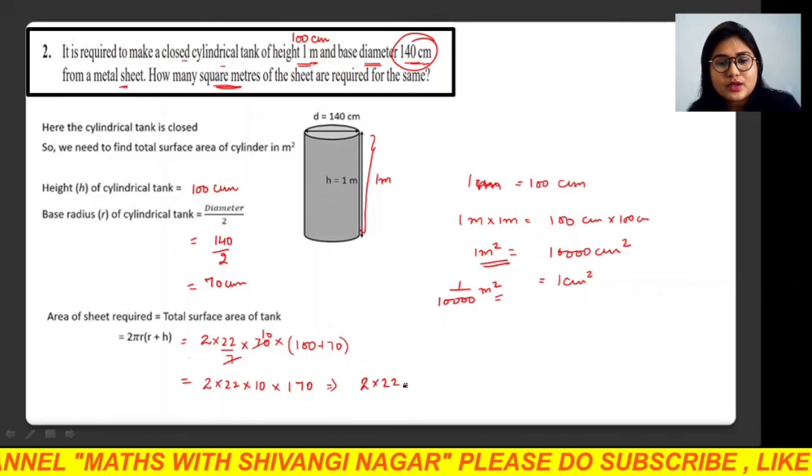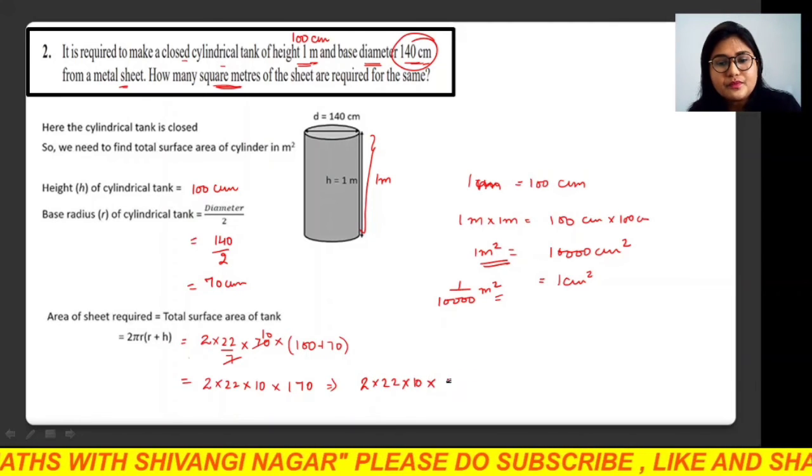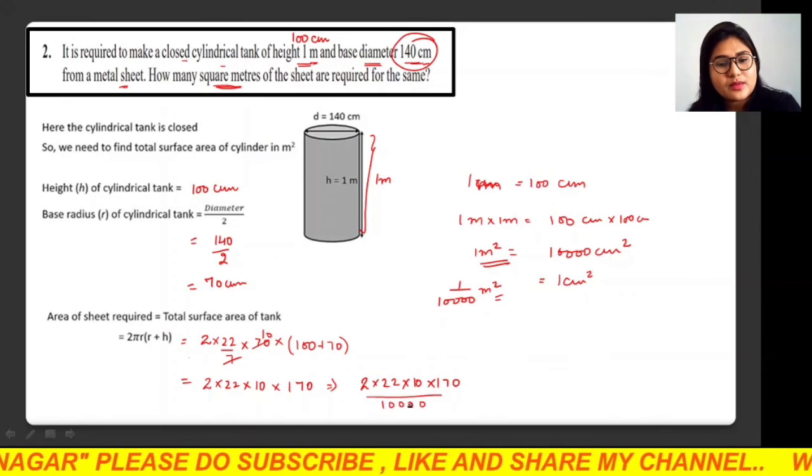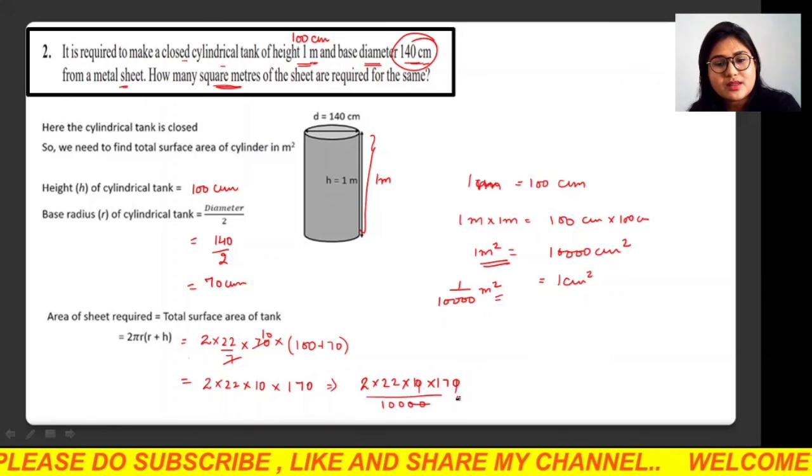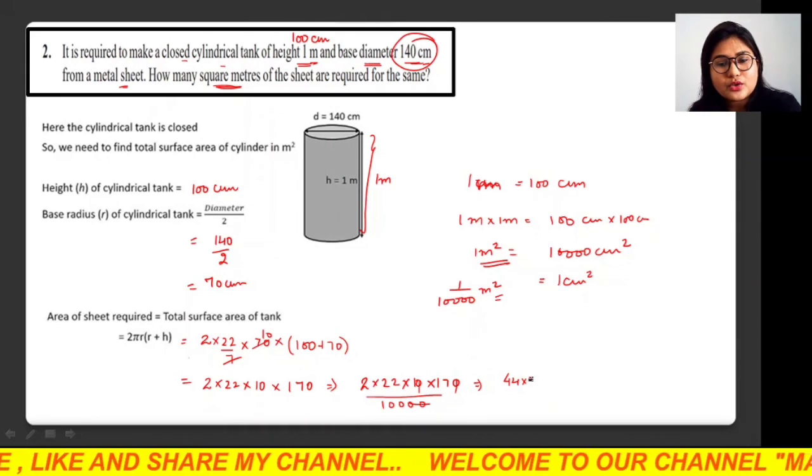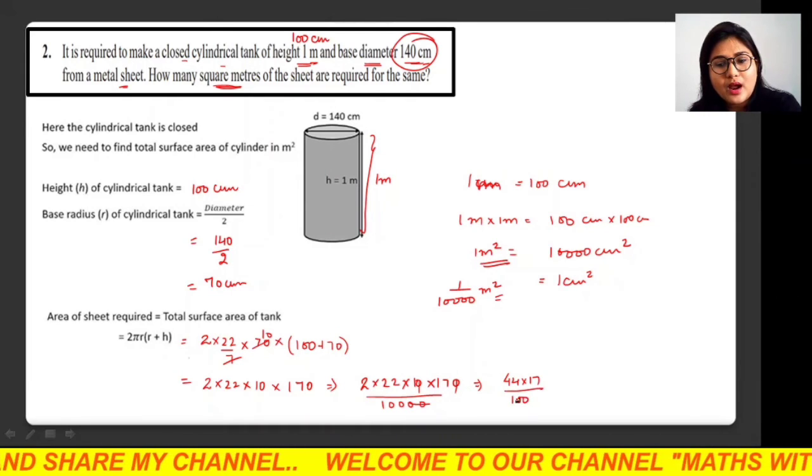So 2 × 22 × 10 × 170 divided by 10,000. Two zeros will cancel out. So 2 × 22 is 44 × 17 / 100.